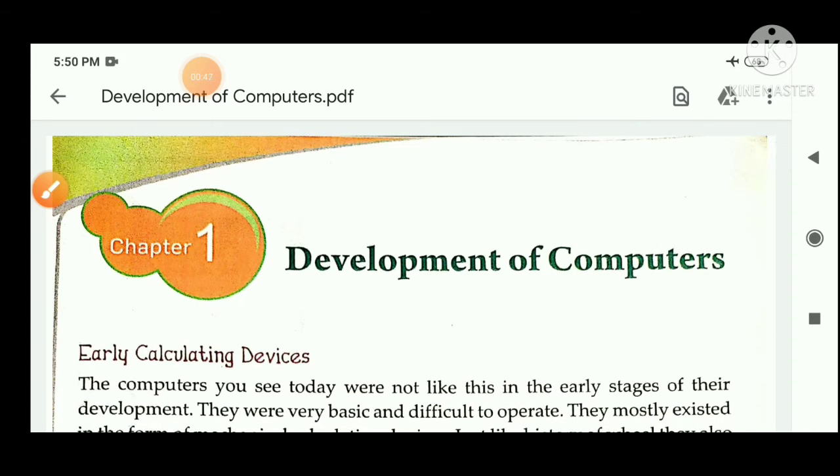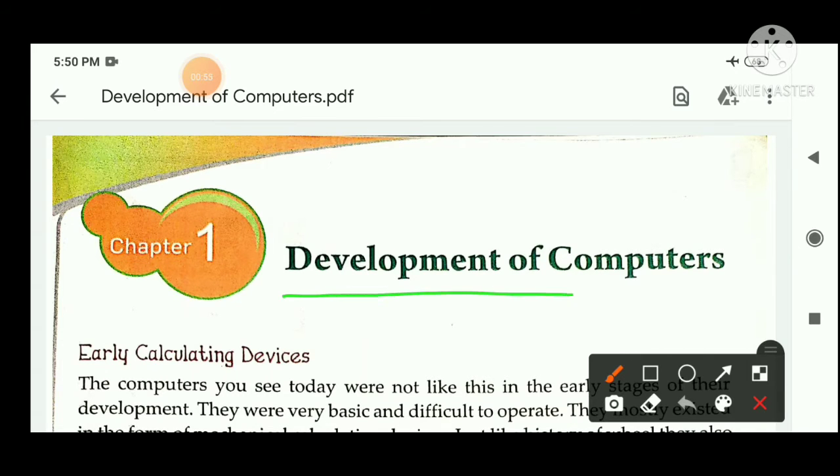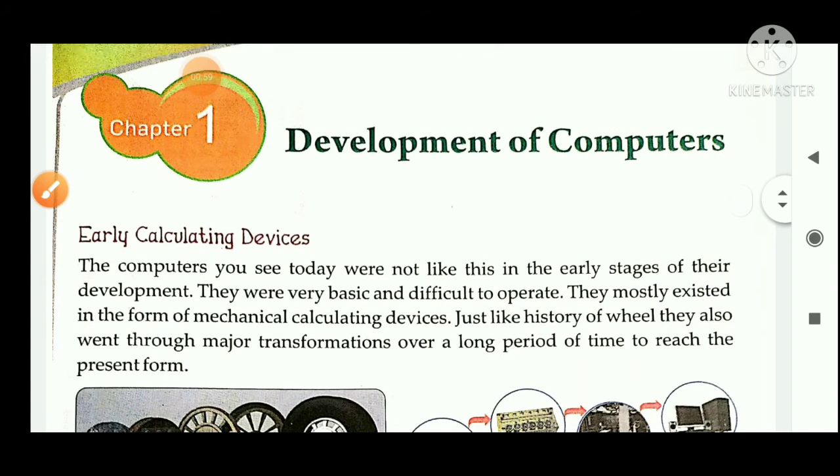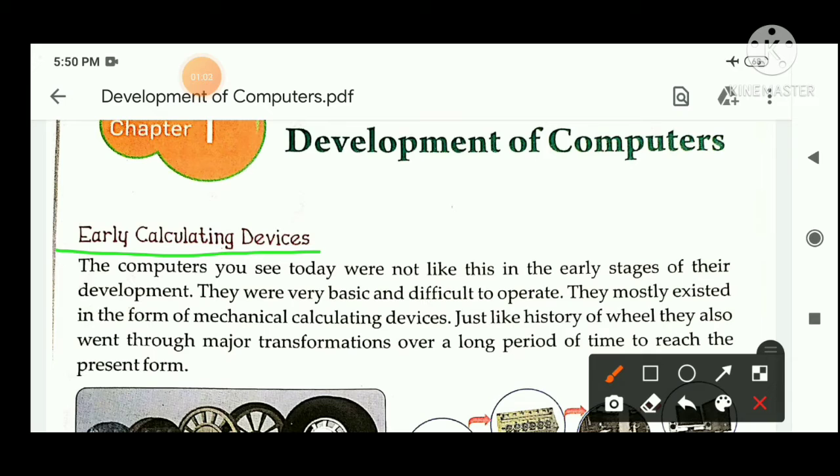Now we start Chapter 1, and what is the name of the chapter? Chapter name is Development of Computers. First topic is Early Calculating Devices, means प्रारंभिक गणना करने वाली डिवाइसेस. जो computer आज आप देखते हैं वो उन computers के development के early stage में वैसे नहीं दिखते थे. वे computers बहुत ही basic थे और उनको operate करना बहुत ही difficult होता था. वे generally mechanical calculating devices के form में होते थे, जैसे कि आप जानते हैं History of Wheel.